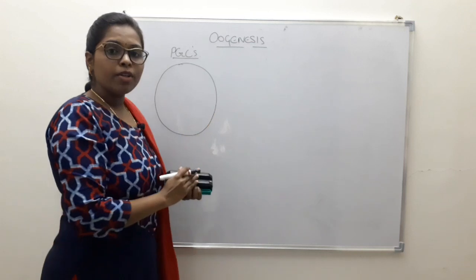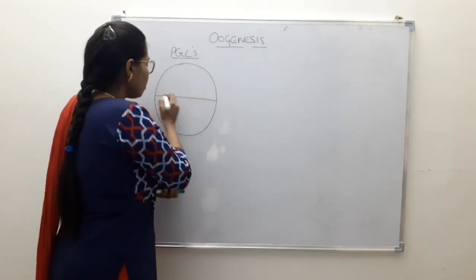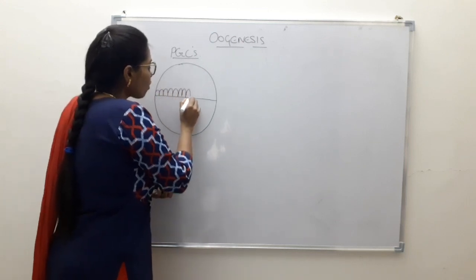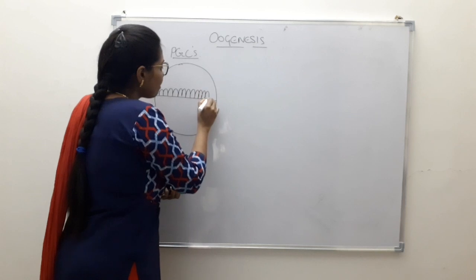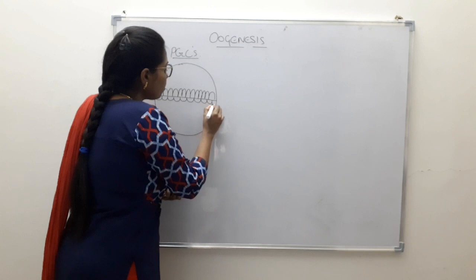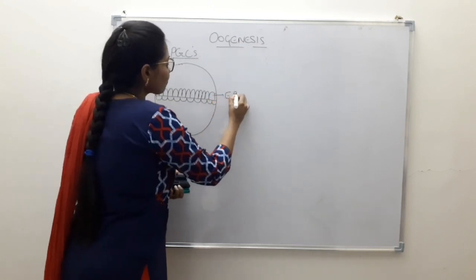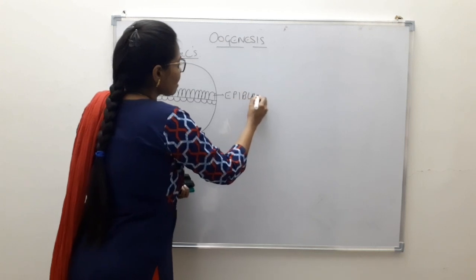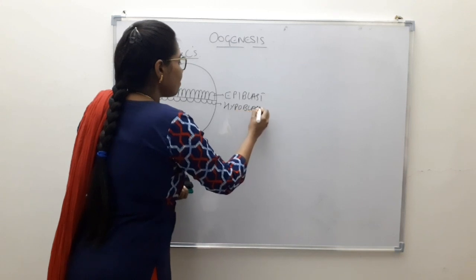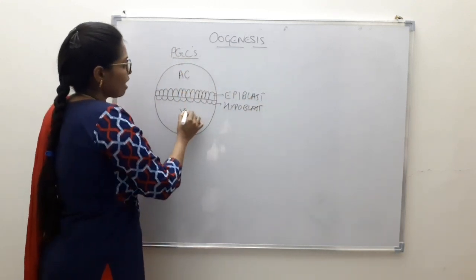If this is the embryo at the earliest, around the second week of development, we saw that it had two layers: the epiblast and the hypoblast. So this embryo at this stage consists of two layers — the epiblast and the hypoblast. We know that it is suspended by two cavities: the amniotic cavity and the yolk sac.